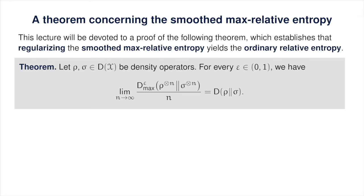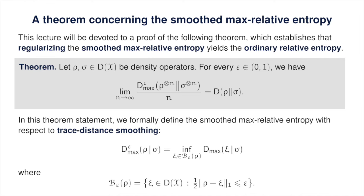Naturally, we need to be precise about the smoothing, as there are multiple choices for how the smooth max relative entropy is defined, as we discussed in the previous lecture. We are going to choose trace distance smoothing, where two states are considered to be epsilon close if one-half of the trace norm of their difference is at most epsilon. The factor of one-half is just a normalization, so that the distance between any two states is always a real number between 0 and 1. The theorem remains true for other notions of smoothing, including those based on fidelity rather than trace distance, and that will become clear as we go through the proof.